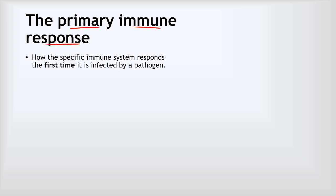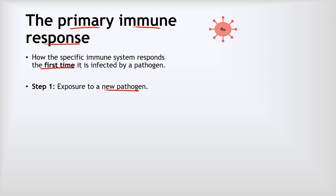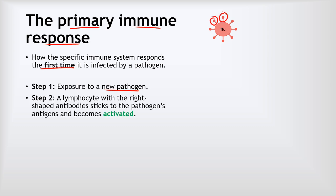Now we're going to look at the primary immune response — how the specific immune system responds the first time it's infected by a pathogen. That pathogen has evaded our physical barriers and chemical defences and has now infected us. The first step is exposure to the new pathogen — in this case, the flu, coated in circular antigens. Step two is that a lymphocyte with the right-shaped antibodies will stick to the pathogen's antigens and become activated.